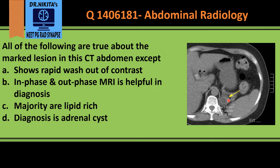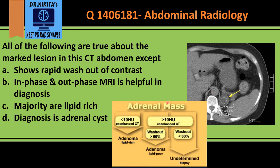This is a left adrenal lesion. We need to know the algorithm for adrenal mass identification. On a non-contrast CT, if the HU value is less than 10, it means the lesion is a lipid-rich adenoma — fat will have a low HU. A value less than 10 for an adrenal lesion is suggestive of lipid-rich adenoma, which is the most common incidental lesion found on CT abdomen. If the HU is more than 10, we need to calculate the washout.